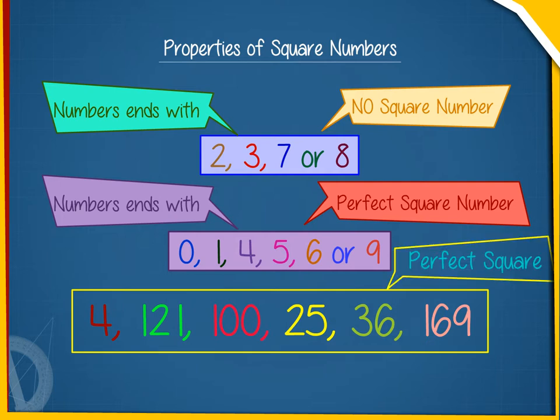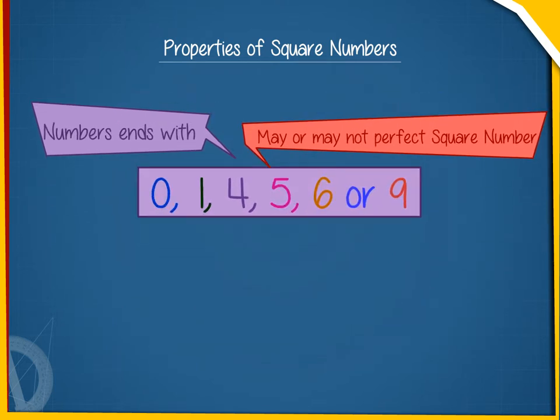A number ending with 0, 1, 4, 5, 6 or 9 may or may not be a perfect square.